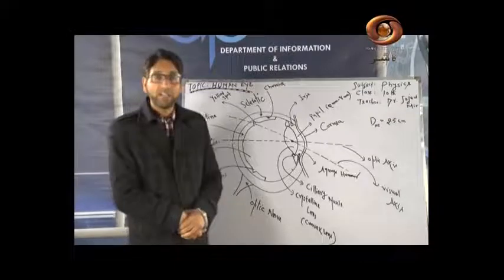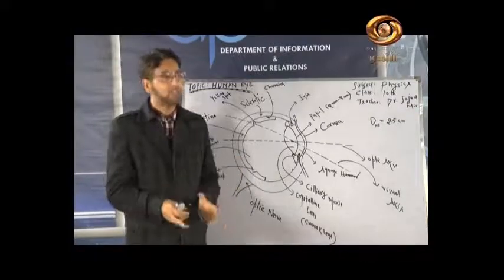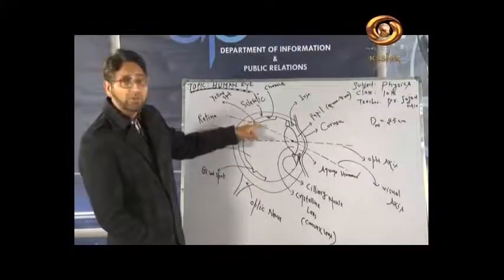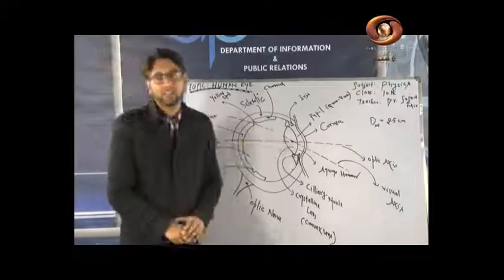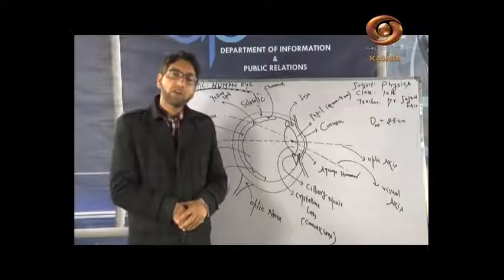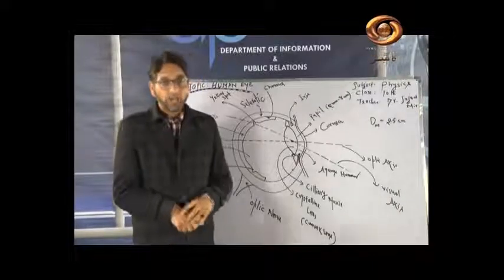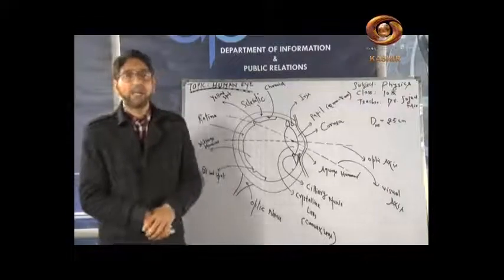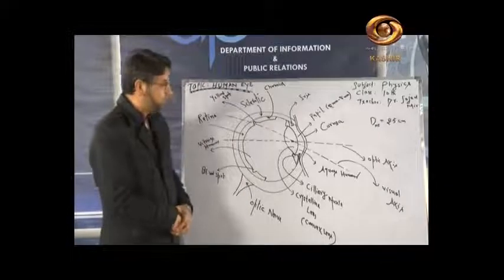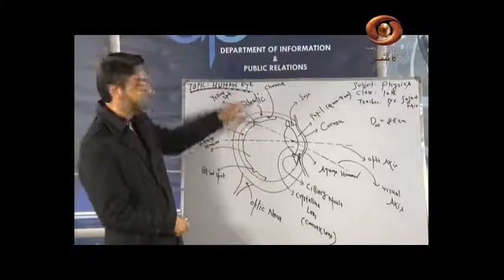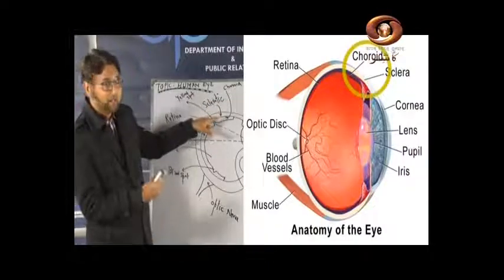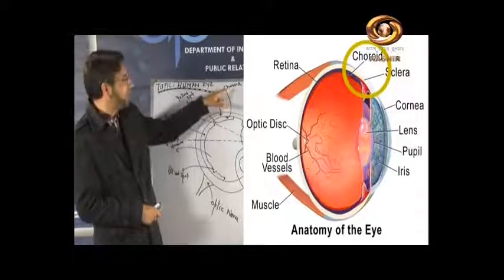So to summarize: the outer membrane of the eye is the sclerotic. It is opaque and dense, and its function is to protect the eye. Just behind the sclerotic, there is a layer called the choroid, which is black in color. The choroid absorbs light and prevents light from spreading inside the eye, which would otherwise interfere with image formation on the retina.